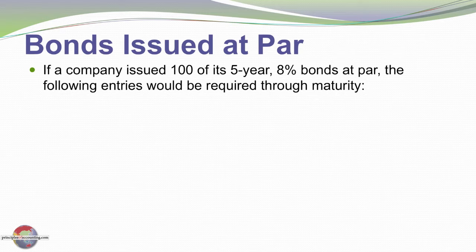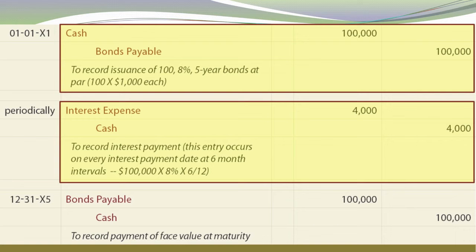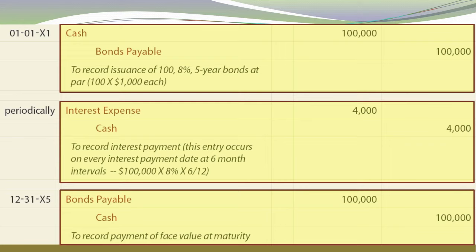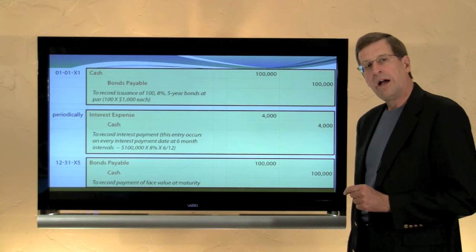Looking at the accounting for bonds issued at par: assume the company issued 100 of its 5-year, 8% bonds at par. We begin by debiting cash and crediting bonds payable to record the amount received from the borrowing at par value. Every six months we record the interest payment by crediting cash and debiting interest expense $4,000 — that's 8% for half a year on the $100,000. That continues for each of the 10 semi-annual periods, and then at maturity we repay the $100,000. In the next module we'll look at premium and discount situations using the numbers from this illustration.